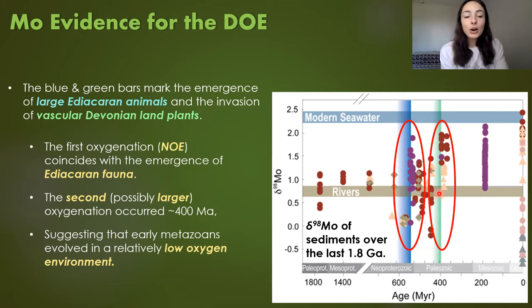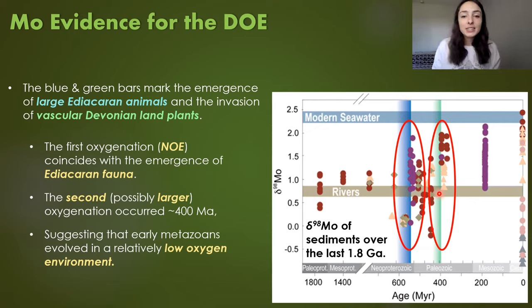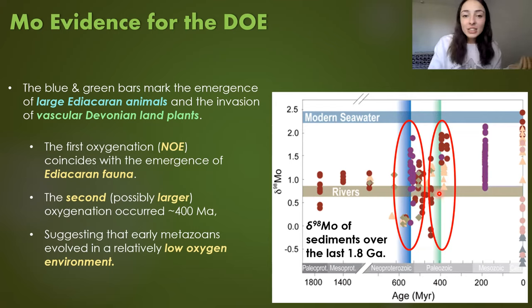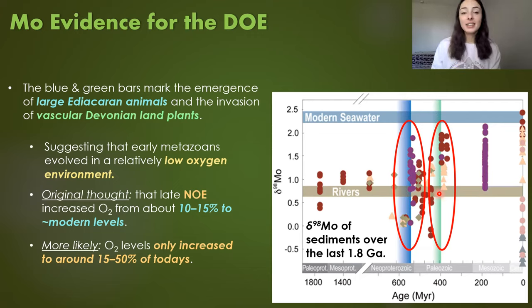The second oxygenation episode lines up with the emergence of vascular land plants around 400 million years ago. The fact that the ocean didn't become fully oxygenated until 400 million years ago suggests early metazoans like sponges, and other species appearing during the Cambrian, Ordovician, and Silurian, evolved in a relatively low-oxygen environment. It's thought that the NOE increased oceanic oxygen levels from about 10–15% of modern levels to about 15–50% of modern levels, rather than completely to 100% of modern day levels.